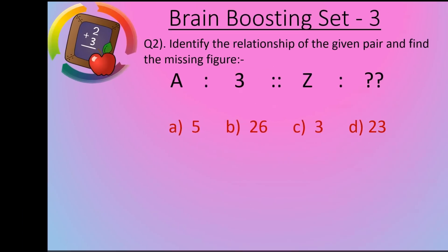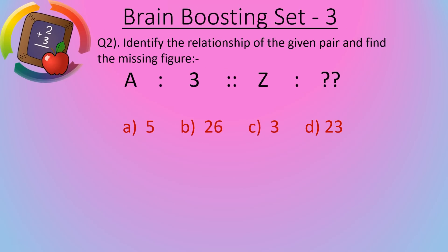Now next question, question number 2. Question number 2 is identify the relationship of the given pair and find the missing figure. So here A equals 3. Now Z equals what? If we see A...